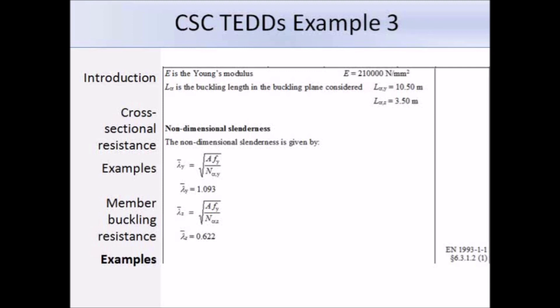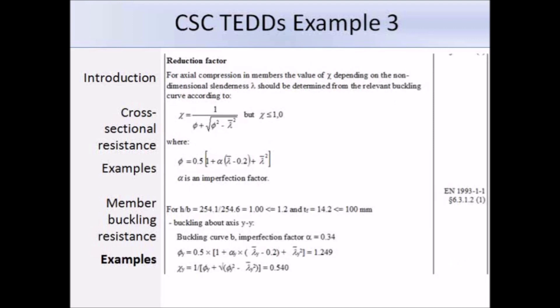To find the reduction factor χ, we first need phi and alpha. For buckling about the y-axis, h/b = 1 which is less than 1.2, and the flange thickness is less than 100 mm, so we use buckling curve b from table 6.2. The corresponding alpha from table 6.1 is 0.34. With λ̄y and alpha known, phi = 1.249, and substituting gives χy = 0.54.